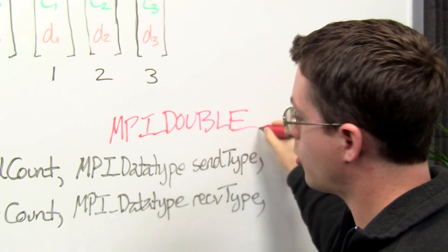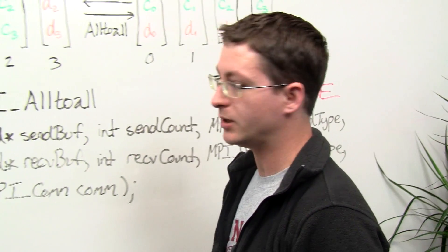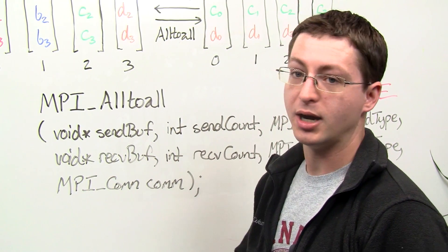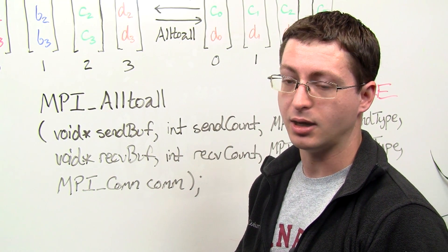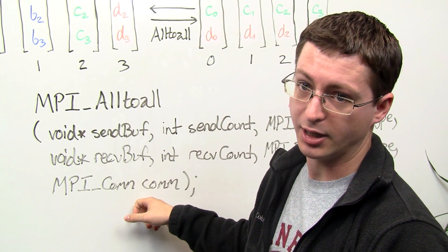Okay, and then of course when we do any sort of collective communication routine we need to tell MPI which processes are participating in this operation, and this is represented through what's called a communicator.